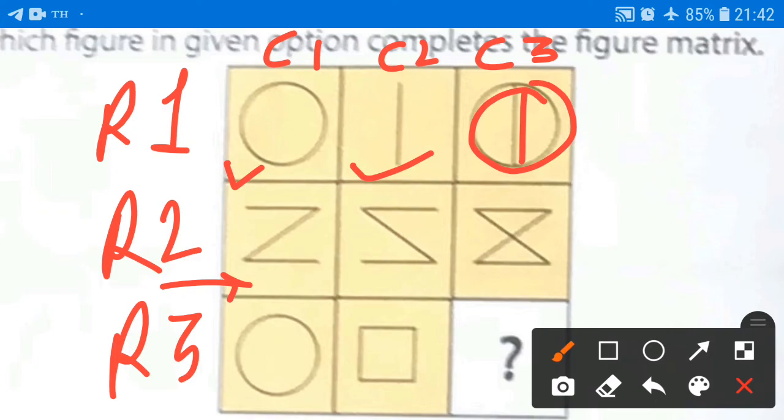Similarly, in the row 2, we have this Z and a mirror image of this Z. And both are included in the next figure, that is the third figure.